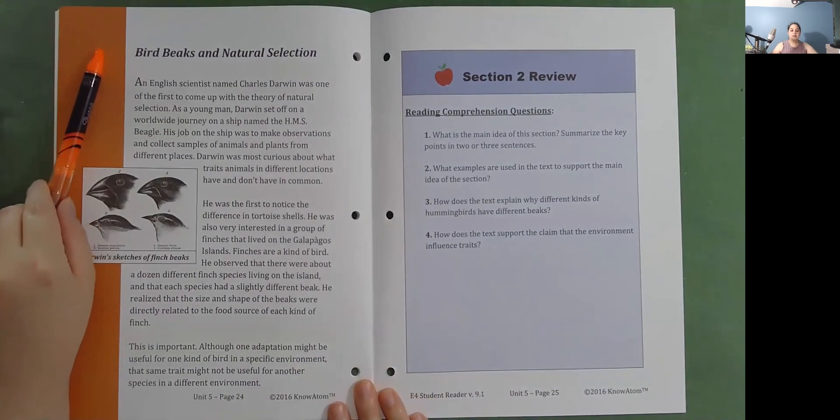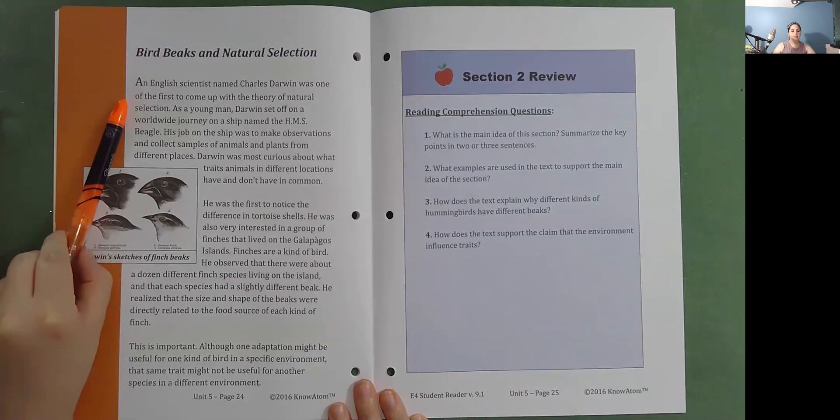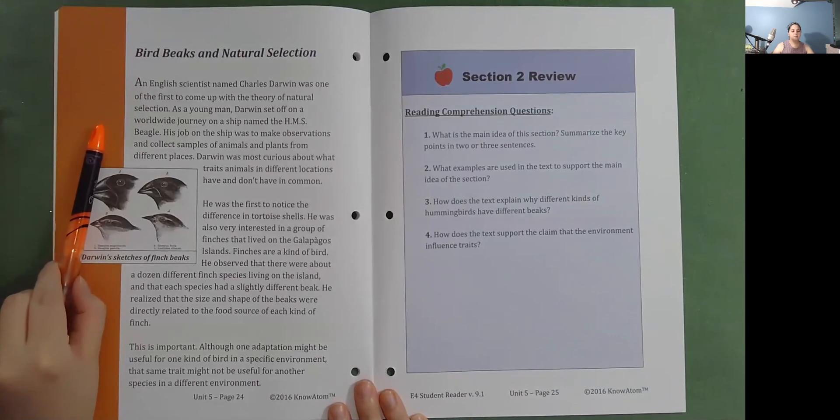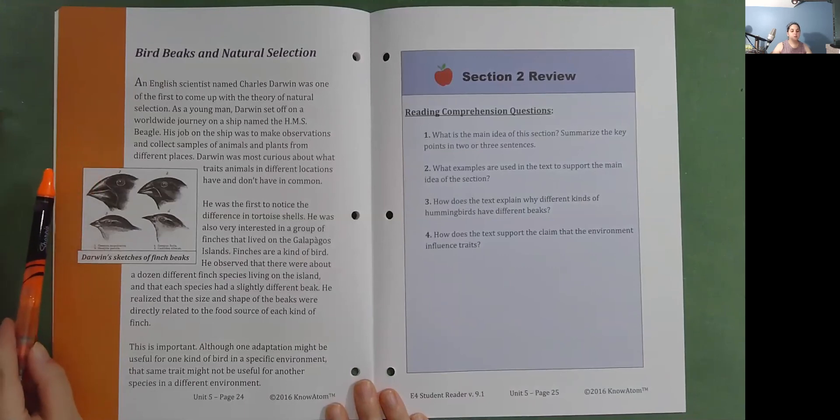Bird beaks and natural selection. An English scientist named Charles Darwin was one of the first to come up with the theory of natural selection. As a young man, Darwin set off on a worldwide journey on a ship named the HMS Beagle. His job on the ship was to make observations and collect samples of animals and plants from different places. Darwin was most curious about what traits animals in different locations have and don't have in common. He was the first to notice the difference in tortoise shells. He was also very interested in a group of finches that lived on the Galapagos Islands. Finches are a kind of bird.